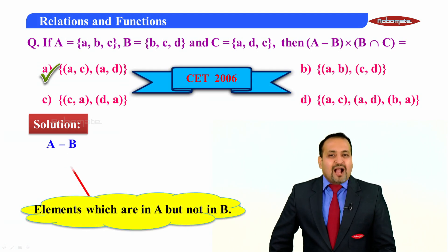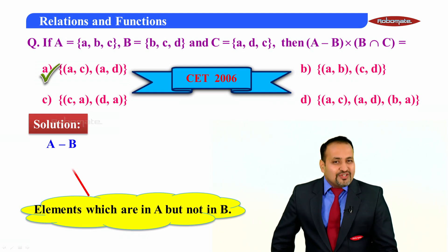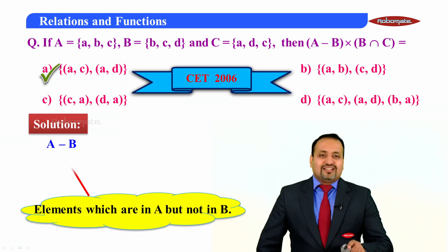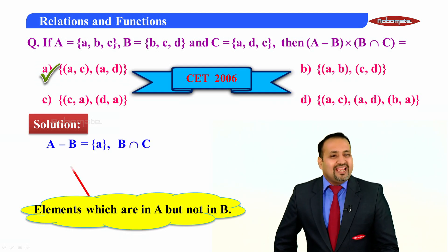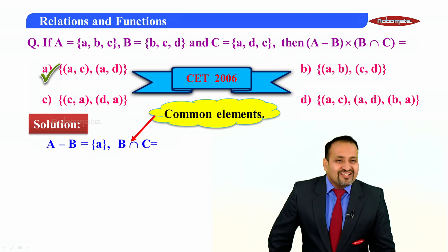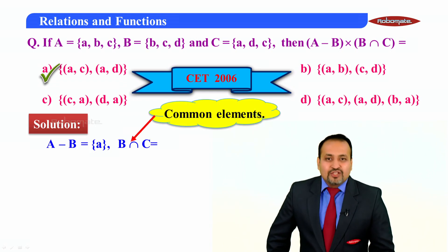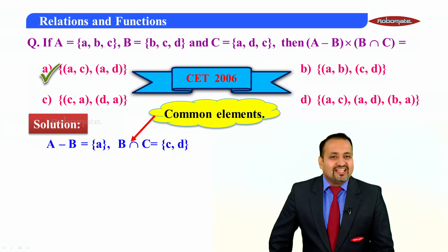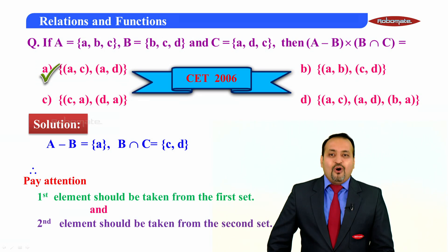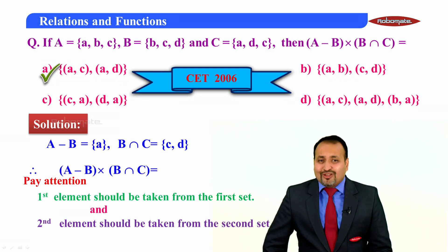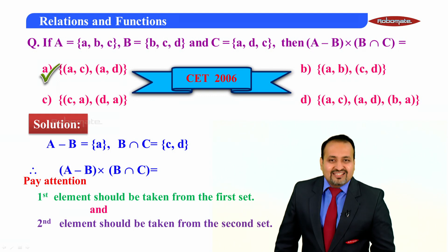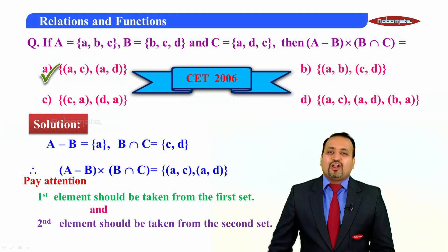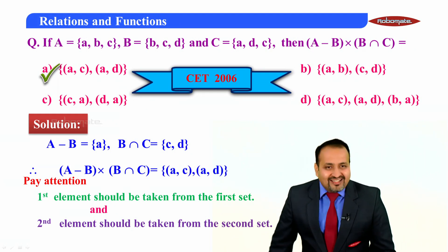Let us see why. A minus B means elements which are in A but not in B, which equals {a}. B intersection C means common elements between B and C, which is {c, d}. Therefore, (A minus B) cross (B intersection C): taking the first element from the first set and the second element from the second set gives us {(a,c), (a,d)}. That is why option A is the correct answer.